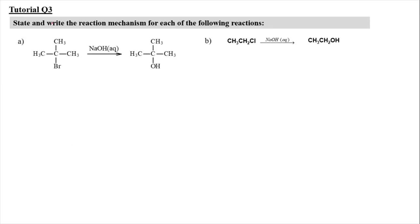For tutorial question 3, we have to state and write the reaction mechanism for each of the following reactions. We have tert-butyl bromide reacting with the nucleophile NaOH, which is going to produce a tertiary alcohol. The Br is going to be substituted with OH, so it will undergo nucleophilic substitution reaction. We need to determine whether it will undergo SN1 or SN2.